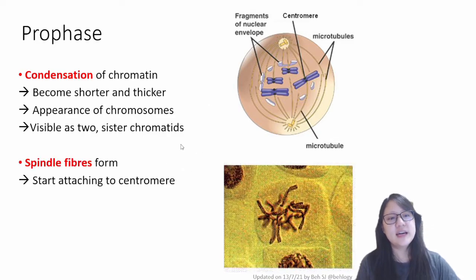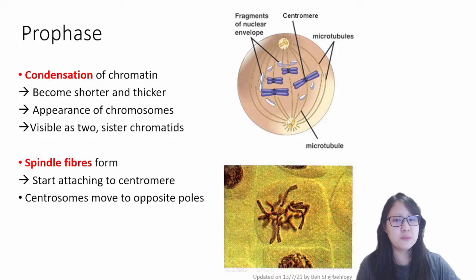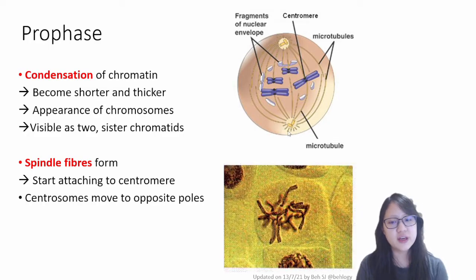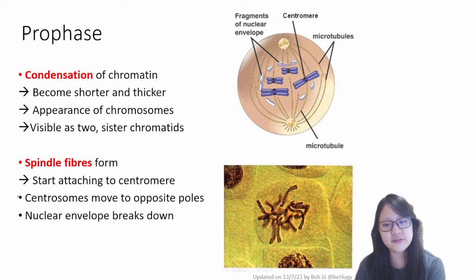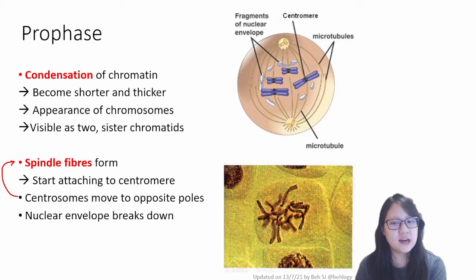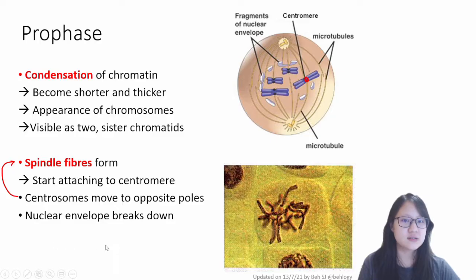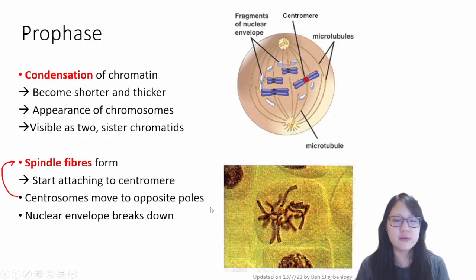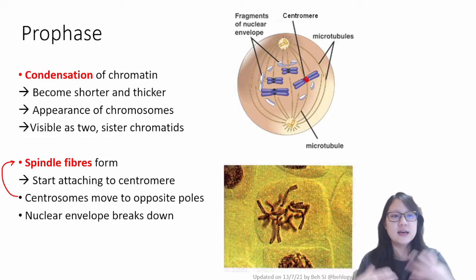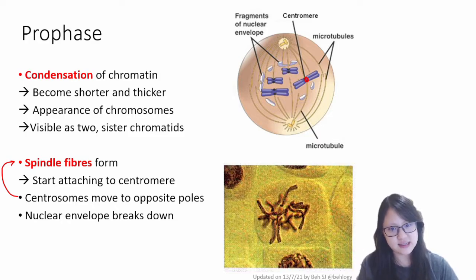The centrosomes move to opposite poles, and centrosomes are actually involved in organizing spindle fibers. Those spindle fibers form and they attach to the centromere during prophase, so they start attaching. It's kind of a process — just imagine them moving around, condensing. It's a process; it's not a static phase.